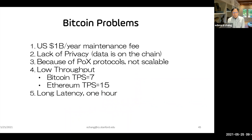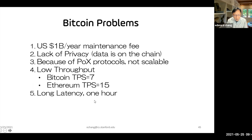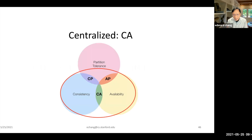Bitcoin's problems: it's very expensive to maintain — about $1 billion a year. There's a lack of privacy because data is put on the public chain. It uses proof-of-work protocol, which is extremely expensive computationally. And throughput is very low — Bitcoin handles only 7 transactions per second, Ethereum 15, which makes it impossible for payment or privacy-preservation applications at scale.